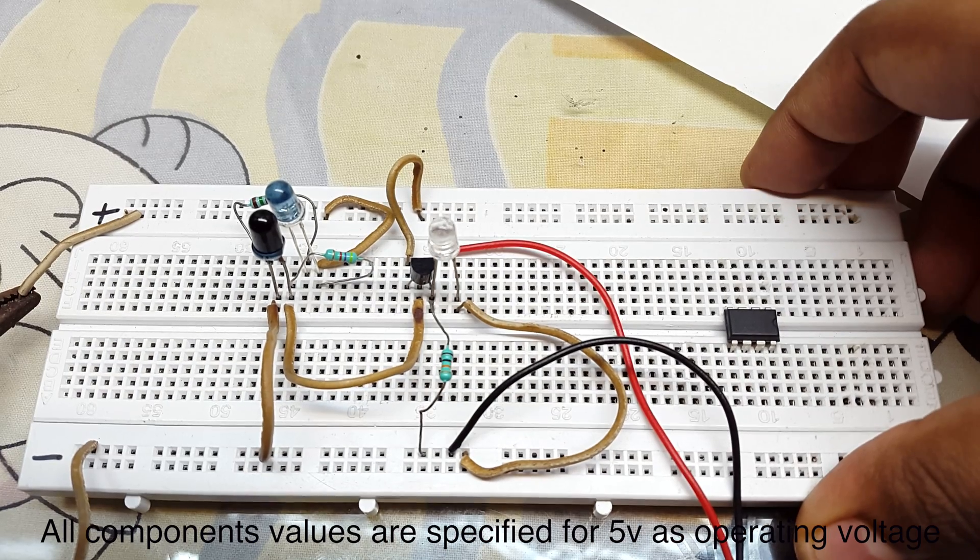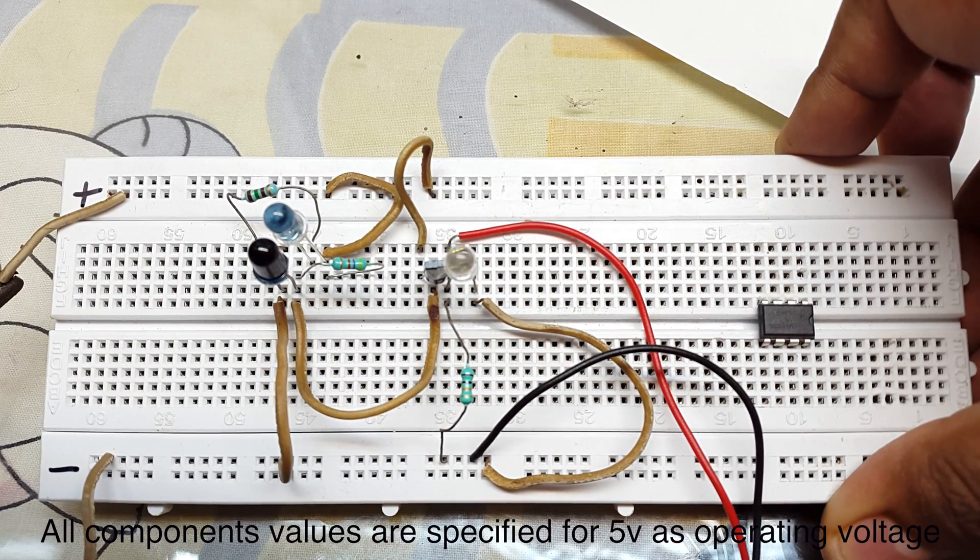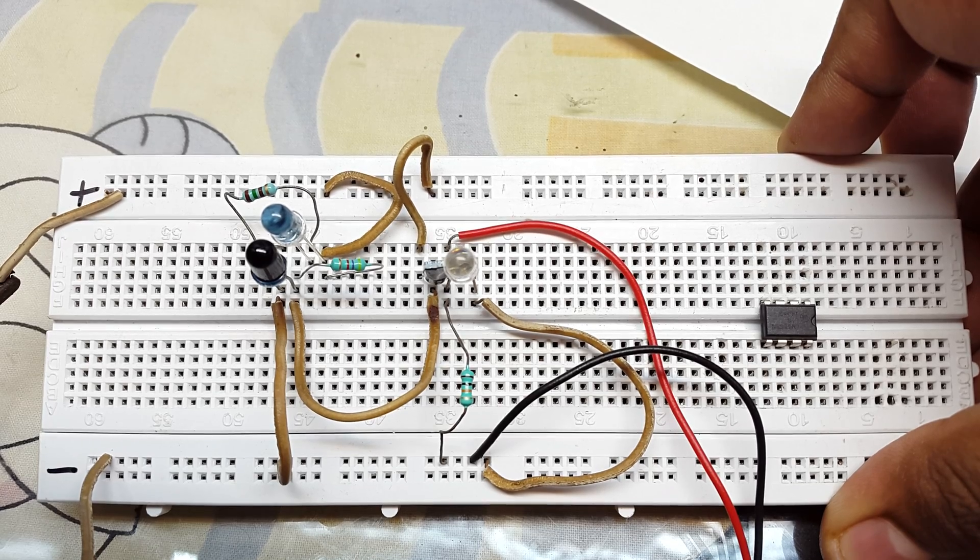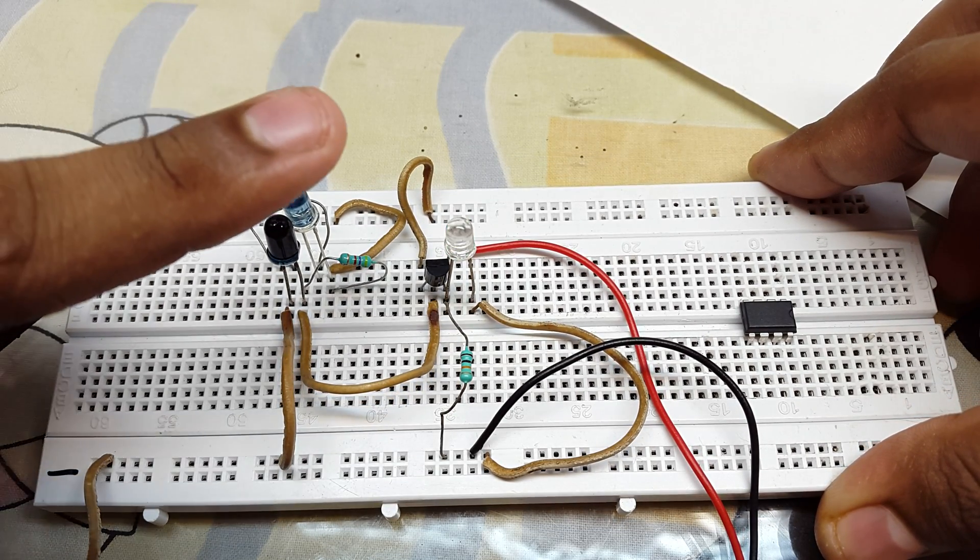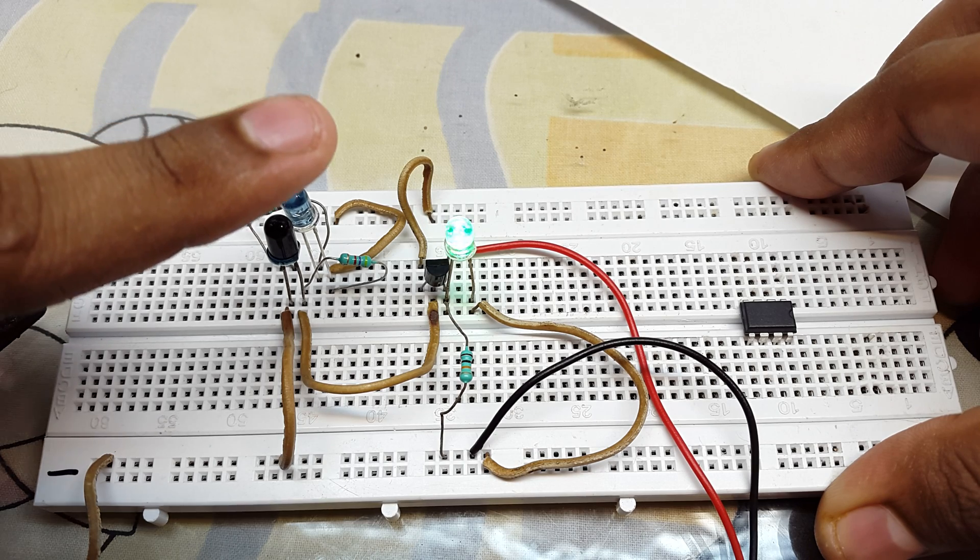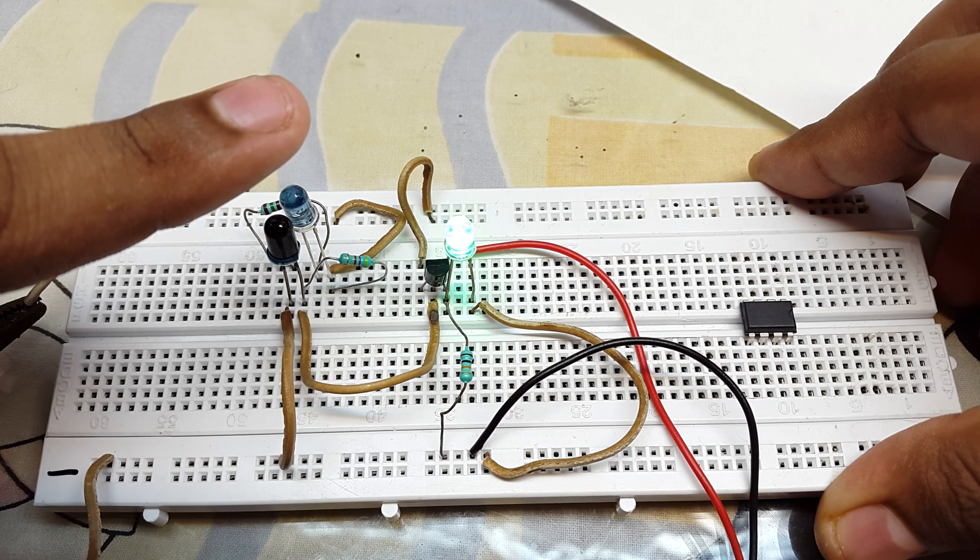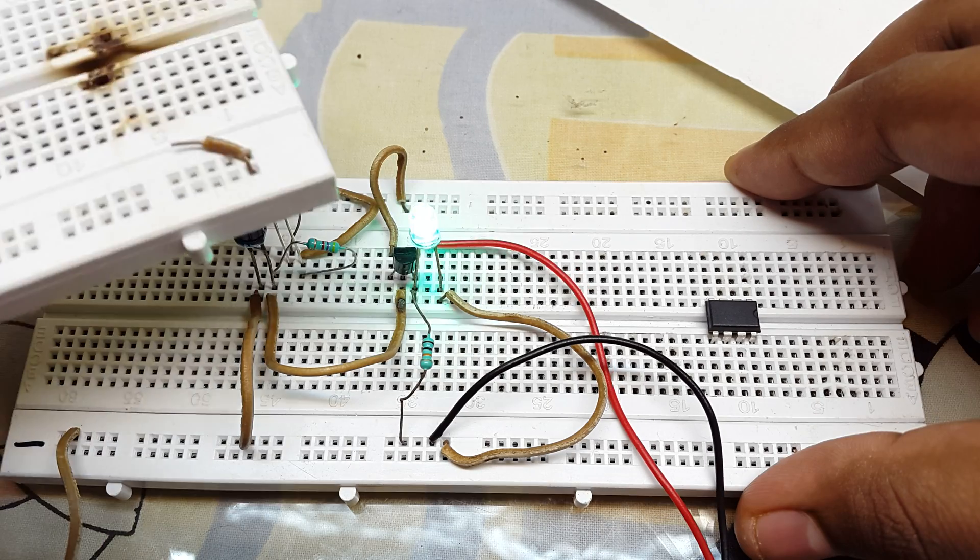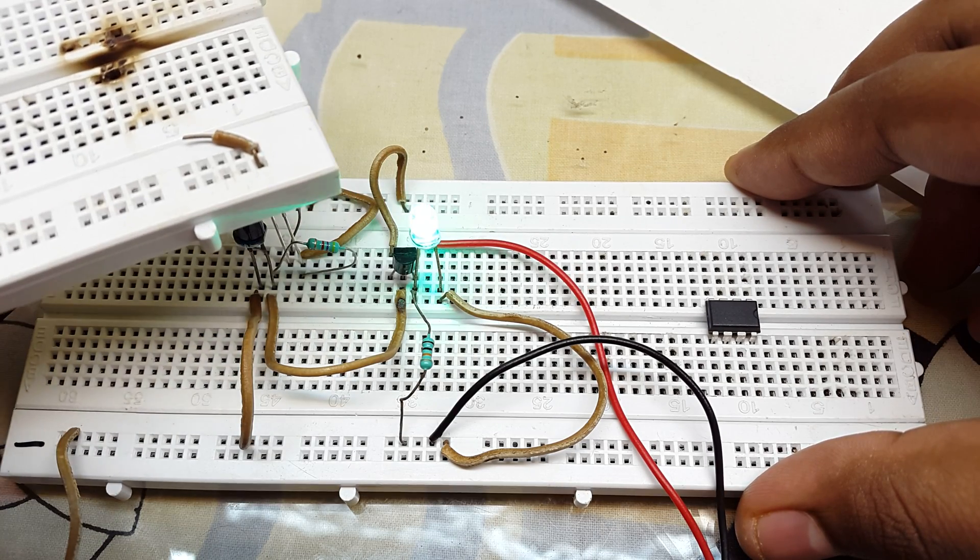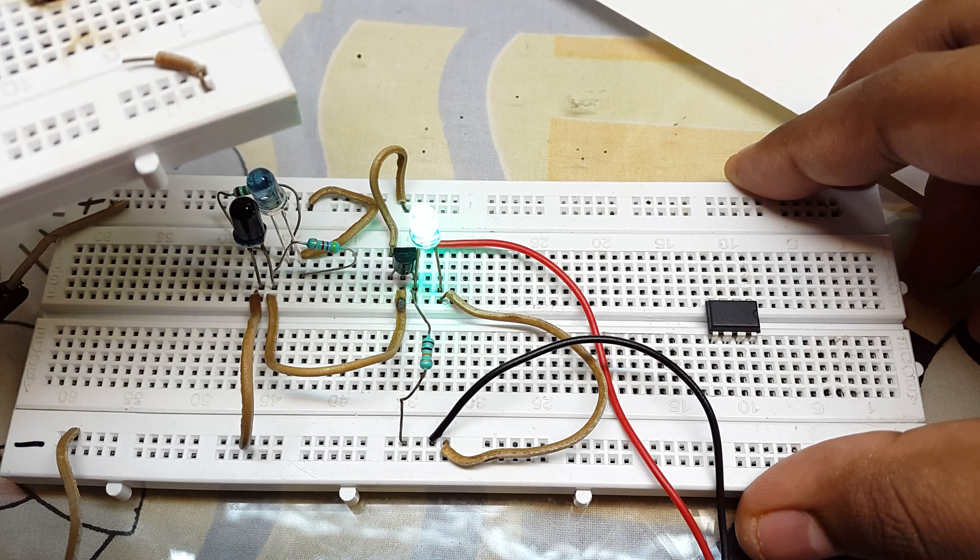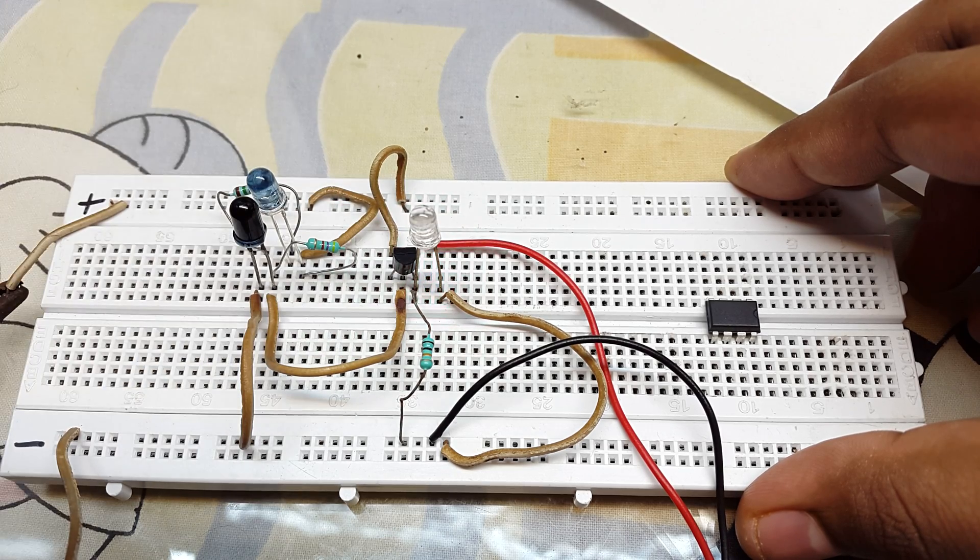This is how the circuit looks like after building it on a breadboard. The output is connected to a LED and a buzzer to show the change in output voltage when proximity is detected. And that's it, thank you for watching and subscribe for more videos.